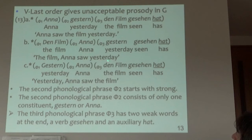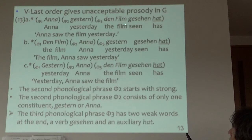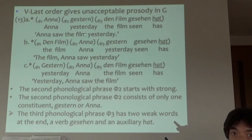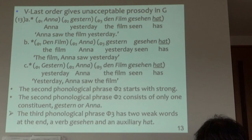The V-last order gives an acceptable prosody in German: 'Ana geshtan der film geze in hand.' We have to exclude this linearization. The third phonological phrase phi3 has some problem because it has two weak words at the end — 'gezen hat.' 'Film gezen hat' — this is too long. So hat can be realized here, it should be linearized here. Then 'film gezen' is shorter. That's why this is not the preferred pattern in German.